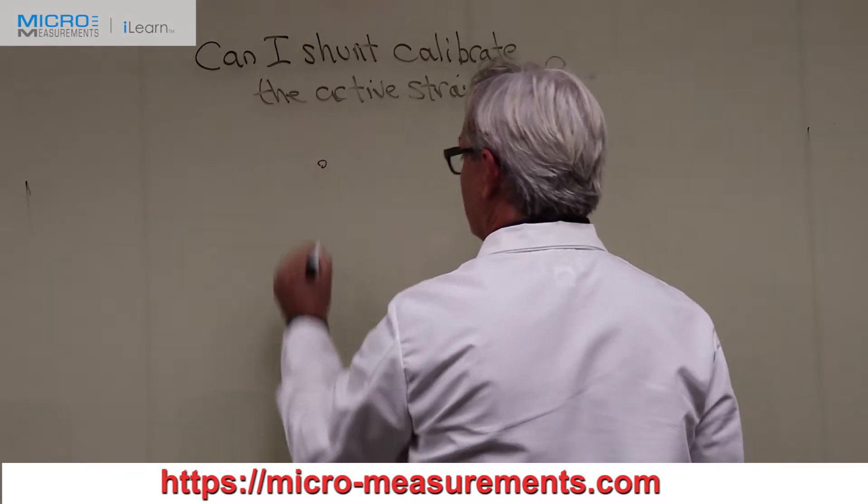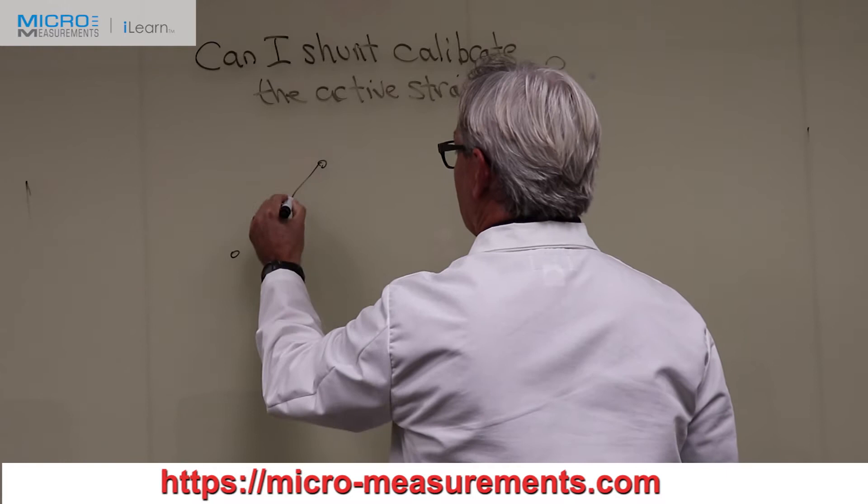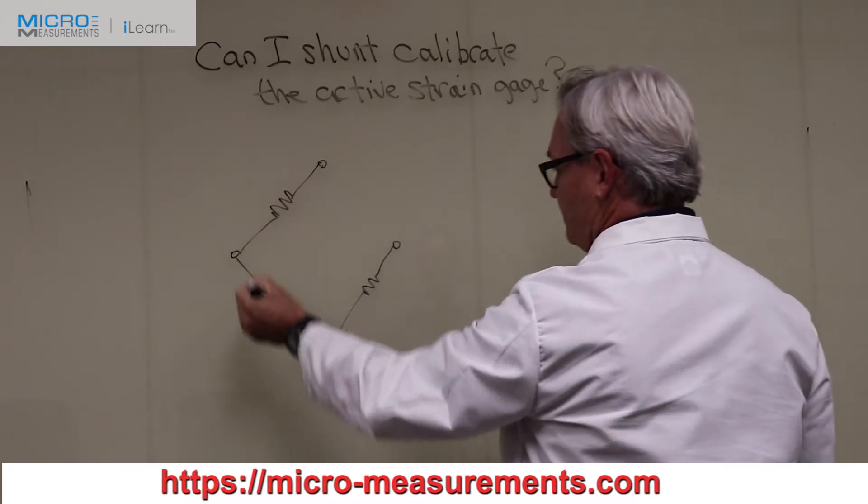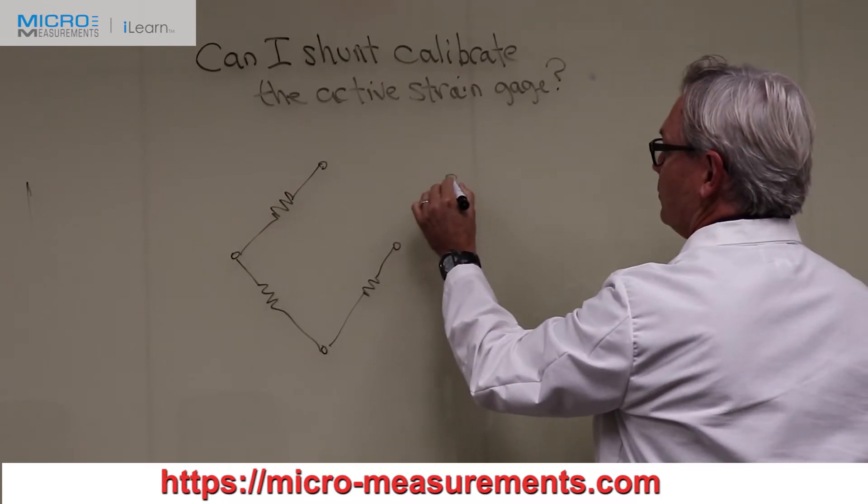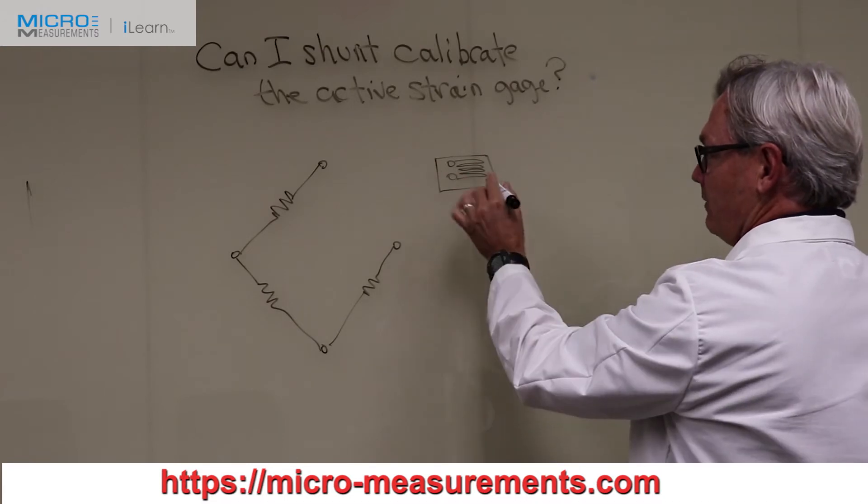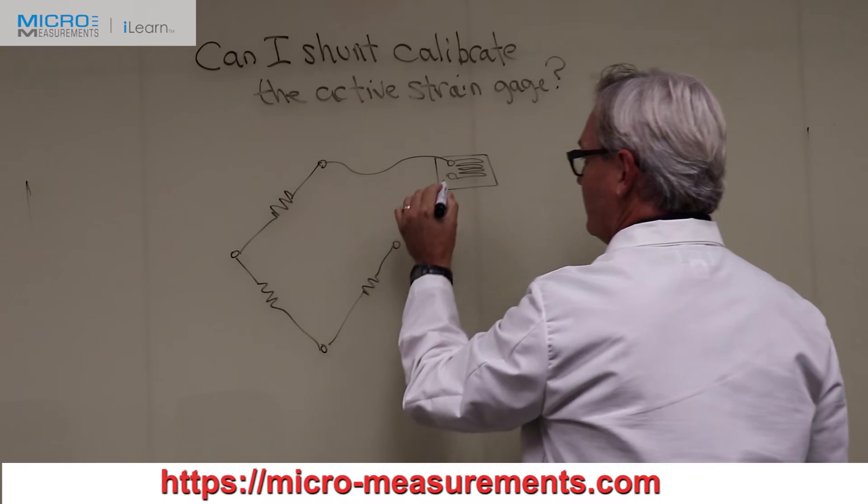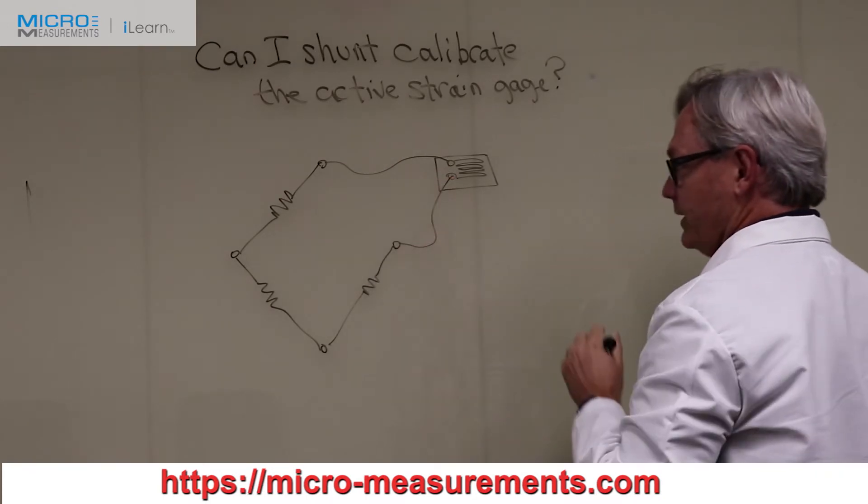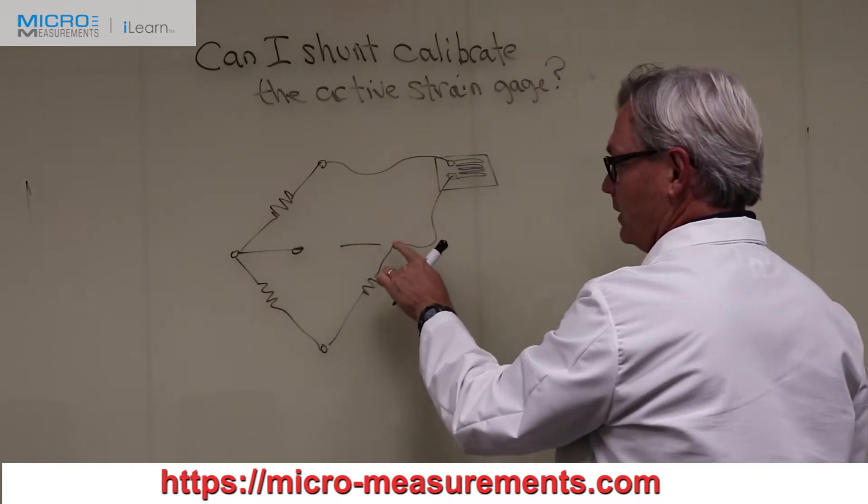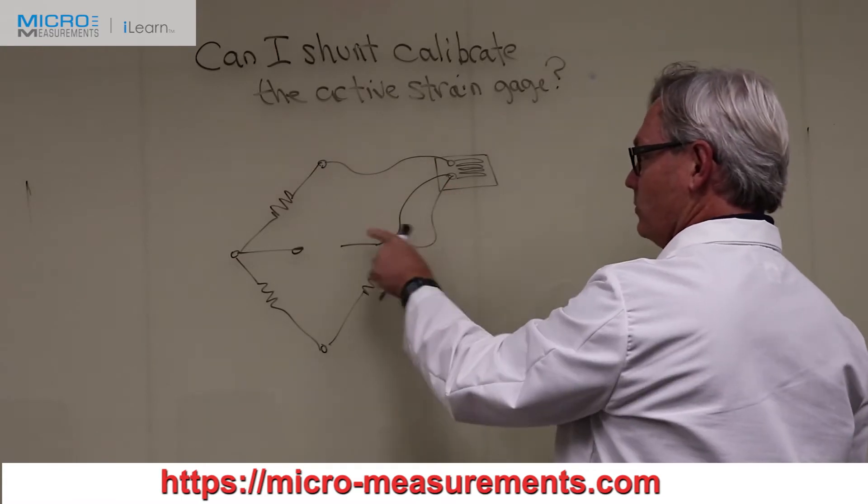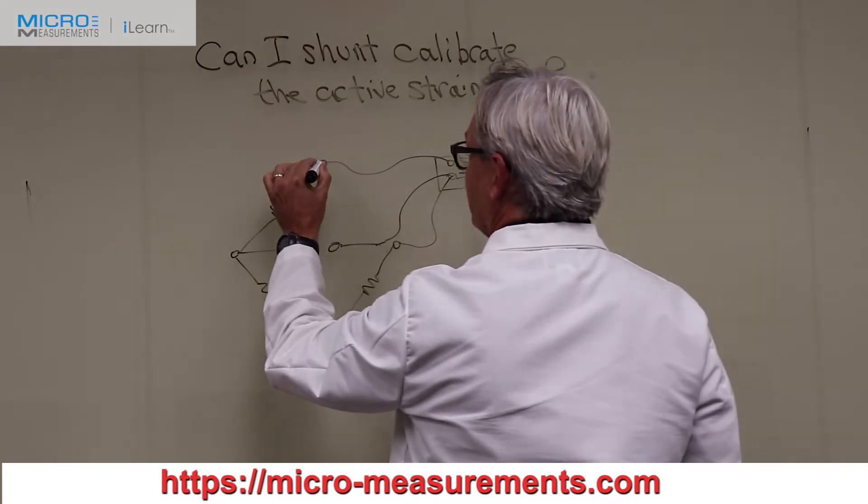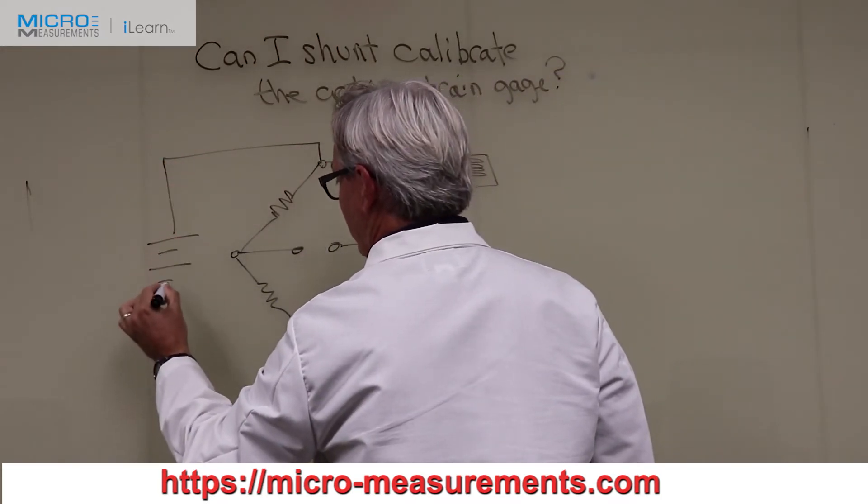So let's start out with a sketch of our Wheatstone Bridge. I'm just drawing the corners of the Wheatstone Bridge along with fixed resistors. And now I'm going to draw what would be our strain gauge. So here we have the active strain gauge. We're going to connect three wires from the active strain gauge into the Wheatstone Bridge. So this circuit is actually a three wire quarter bridge, Wheatstone Bridge circuit.